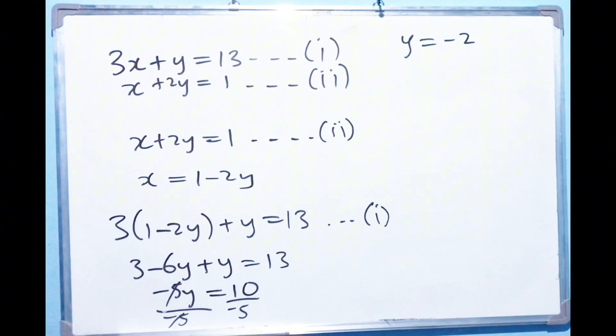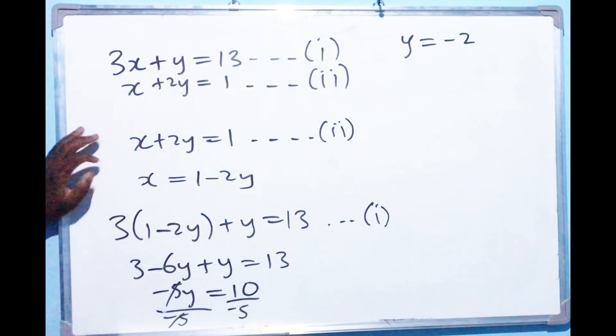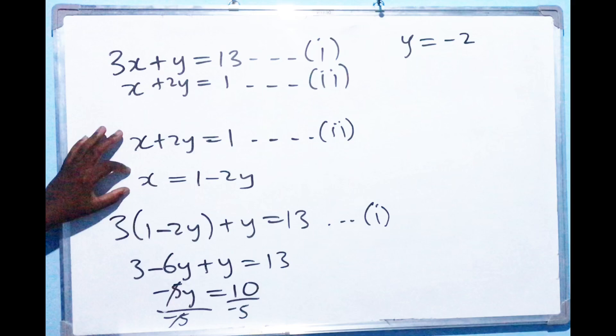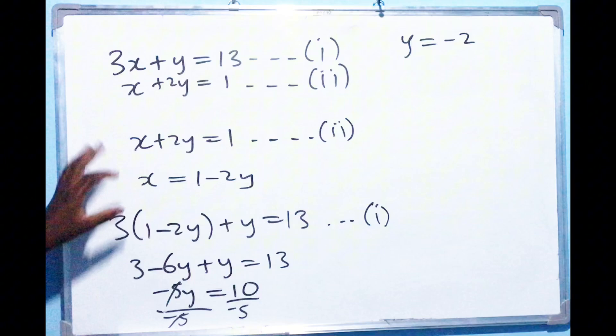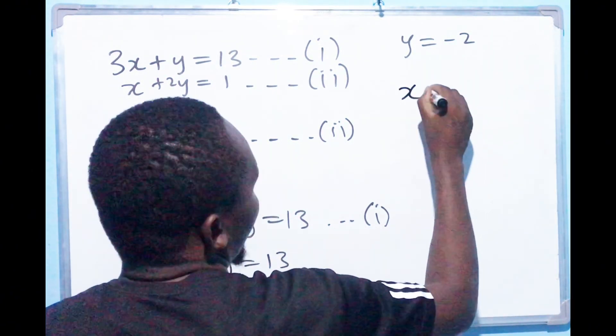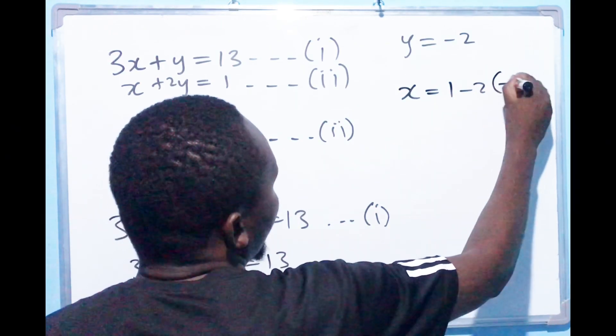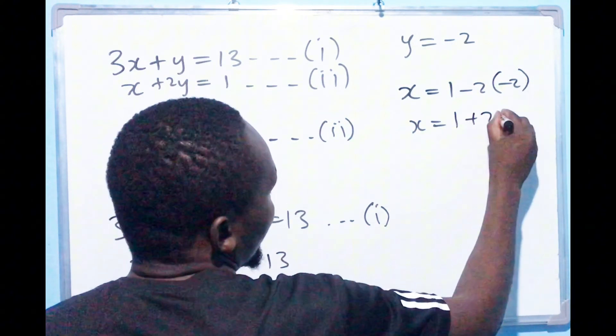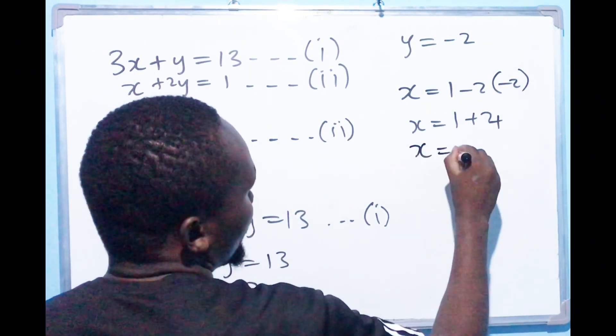Now that we have the value of Y, the next thing that we want to do is to just get this value of Y. You can even plug it in here, this simplified equation that you had, or if you don't want, you can pick any of these two. So for me, I can just simply pick that one and I'll say X equals to 1 minus 2Y. So instead of writing Y here, I can put the value of Y which is minus 2. So X will equal to 1 plus 4. So X will equal to 5.